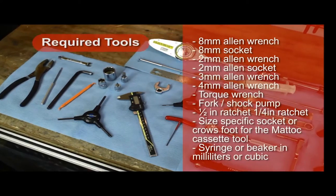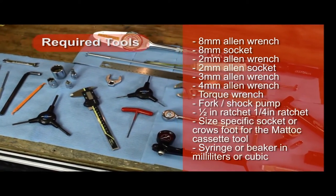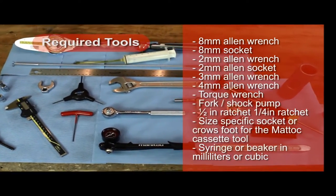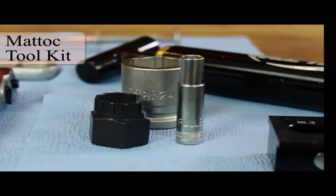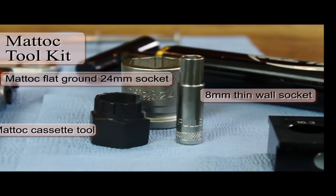You will need many tools to disassemble and reassemble the Matic. Most of these tools are common. To disassemble and reassemble your Matic, you will need to purchase the Matic tool kit. This includes the Matic 8 millimeter thin-walled socket, the Matic cassette tool, and the Matic flat ground 24 millimeter socket.